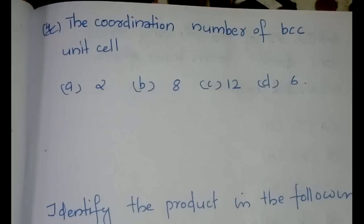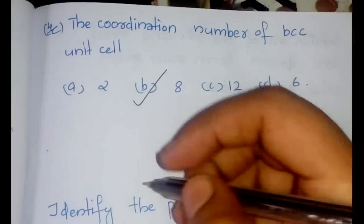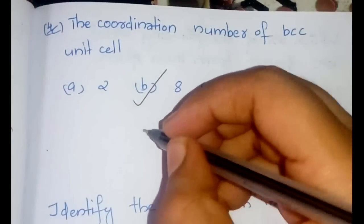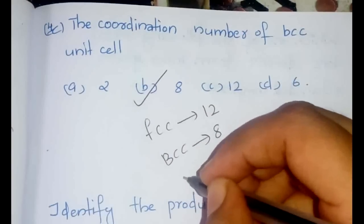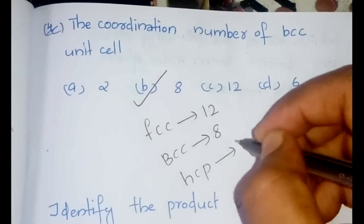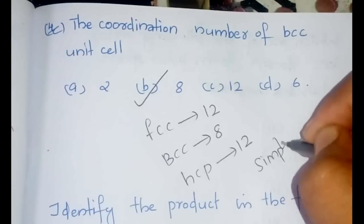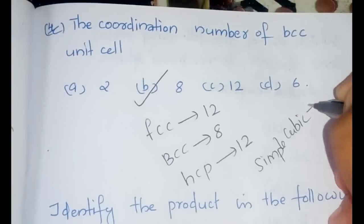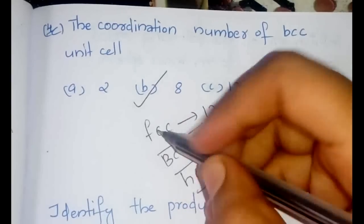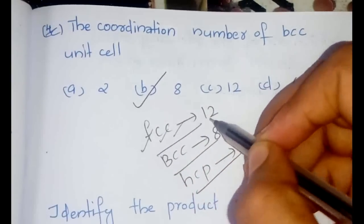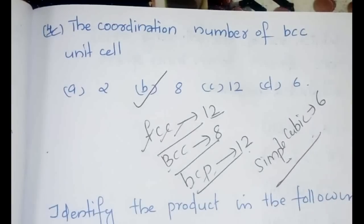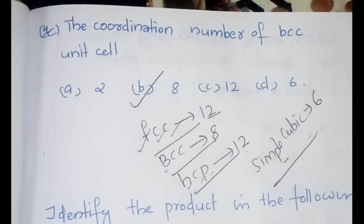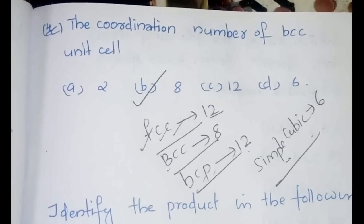The next question asks for the coordination number of BCC unit cell. The answer is 8. So what else you need to remember? For FCC it is 12, for BCC it is 8, for HCP also it is 12, and for simple cubic it will be 6. These are the coordination numbers that you have to remember.